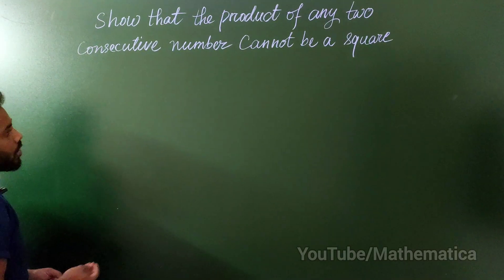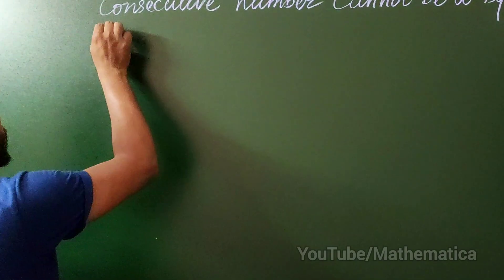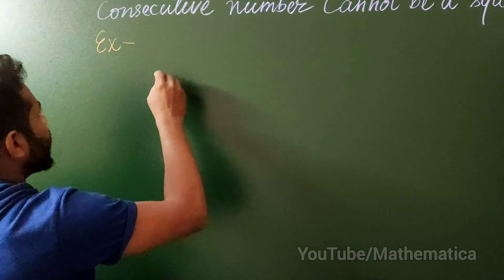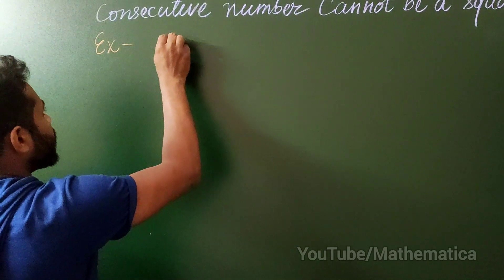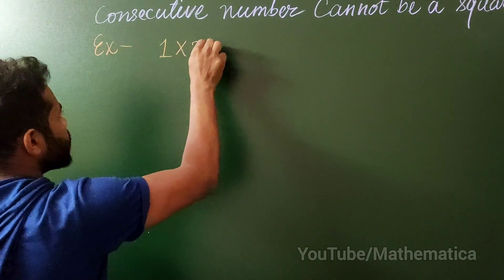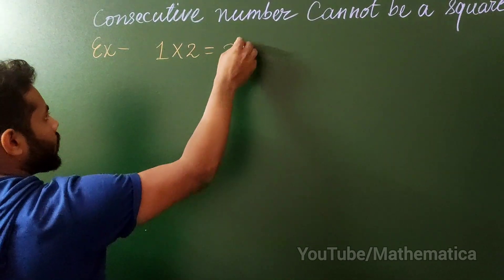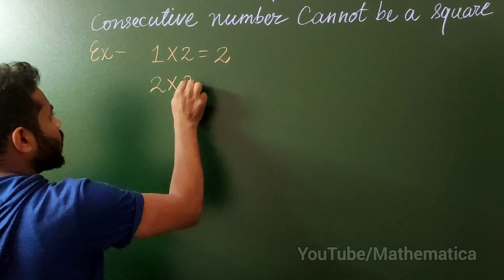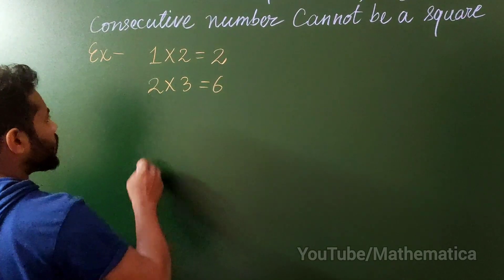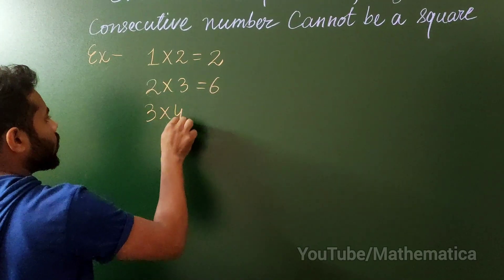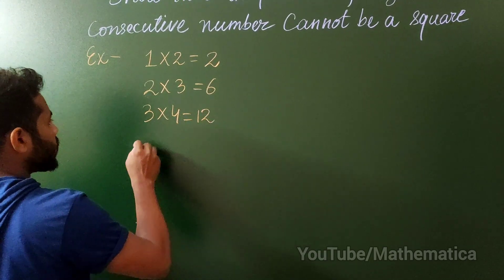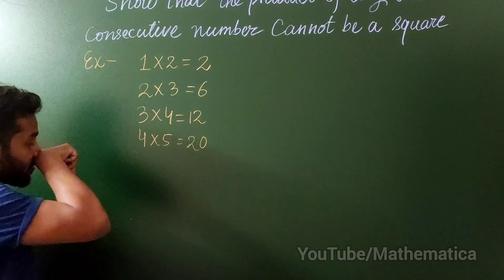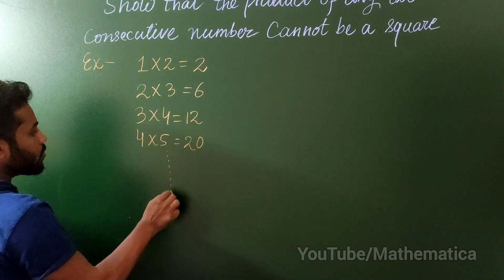As indeed, if I will give some examples: consecutive numbers like 1 into 2 which is 2 is not a perfect square. 2 into 3 is 6 is not a perfect square. 3 into 4 is 12 is not a perfect square. 4 into 5 is 20 which again is not a perfect square. And this thing continues.